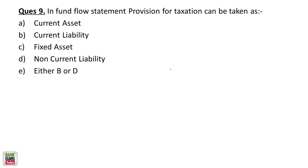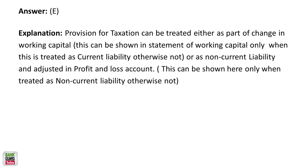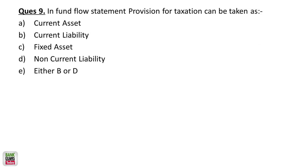In the fund flow statement, provision for taxation is a little complicated. It can be treated as part of the change in working capital only when it is treated as a current liability. It can also be treated as a non-current liability, in which case the adjustment should be shown in the profit and loss account. So the provision for taxation can be either B or D — it can be treated as either current or non-current liability.